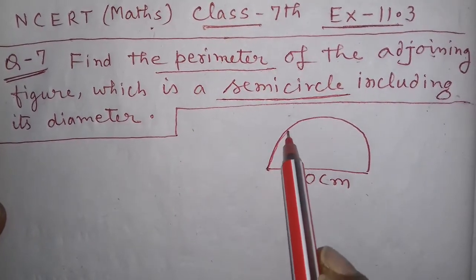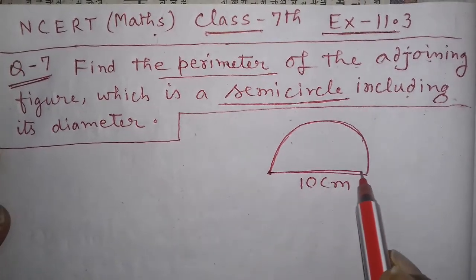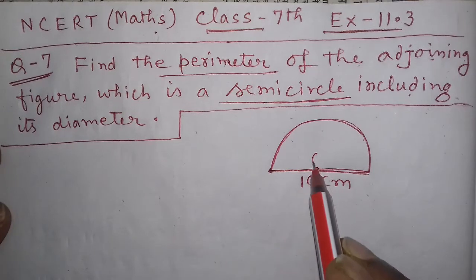This is your semicircle including its diameter. This is the diameter, and this is the center of the circle, O.